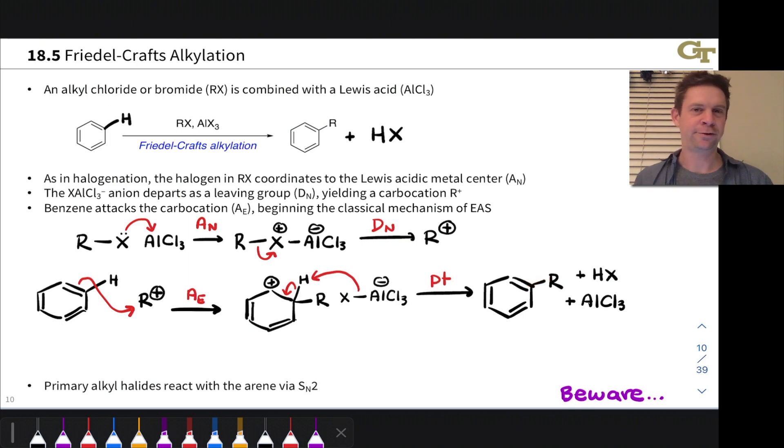However, there are some pitfalls. And the very first pitfall comes in when we think about this loss of a leaving group step. If that generates a primary carbocation, that's a problem. So primary alkyl halides actually don't react exactly through this mechanism, since they're unable, because of the instability of primary cations, to lose that leaving group. This will not form under any circumstances. Hopefully, you picked that up in Organic Chemistry 1. Still true now, but that's not going to form.